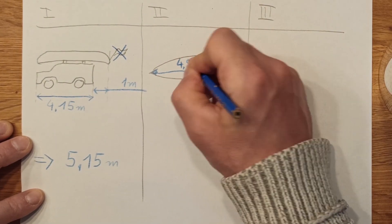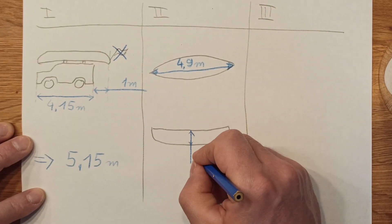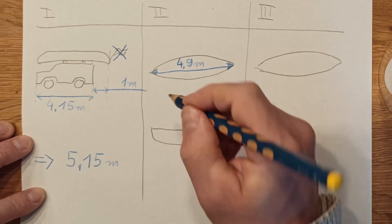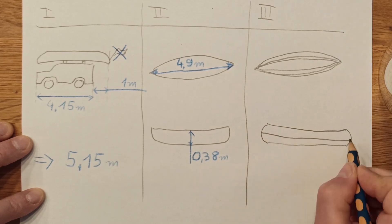I started searching in the internet for a canoe that is shorter than this but can carry 4 persons or more. I was lucky to find a canoe with 4 benches and a total length of 4.9 meters. Also there were pictures from above and from the side so I could take all needed measurements.